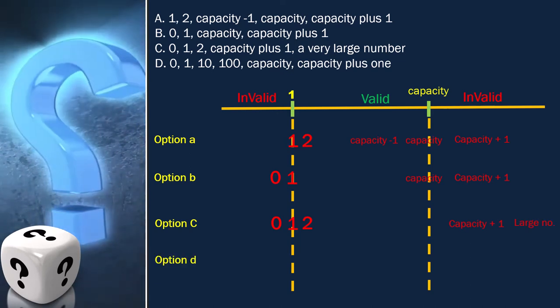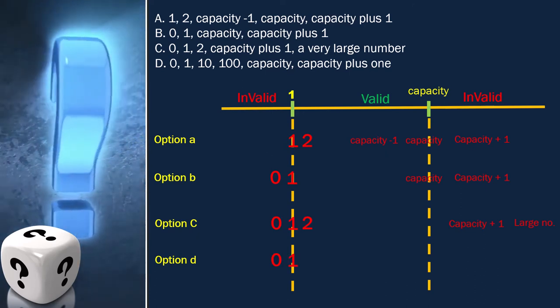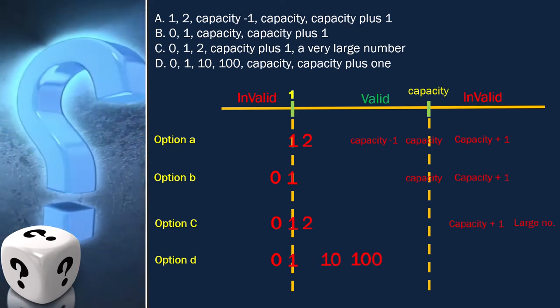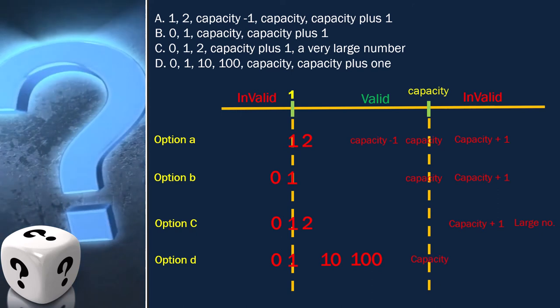Option D is 0, 1, 10, 100, capacity, capacity plus 1.